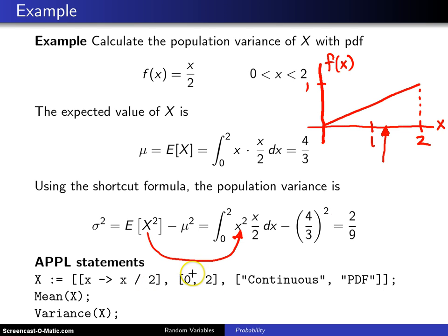The second list contains the support and the third list contains two strings. The first tells you it's a continuous random variable and the second string says that x over 2 is a probability density function.